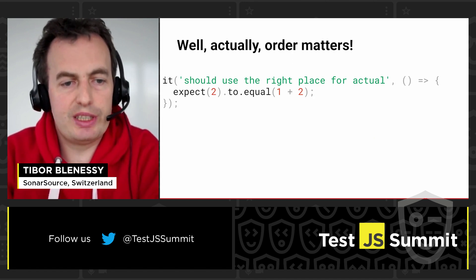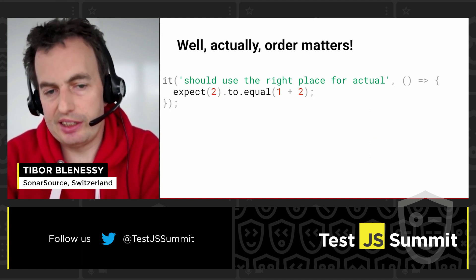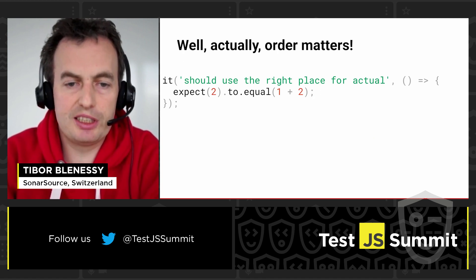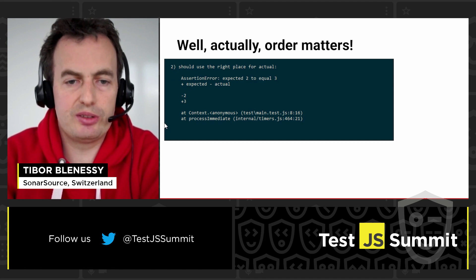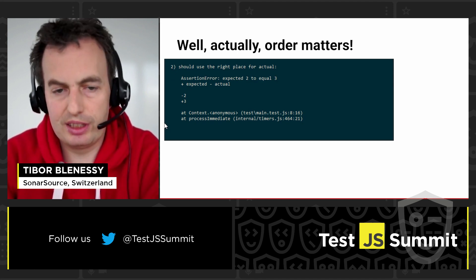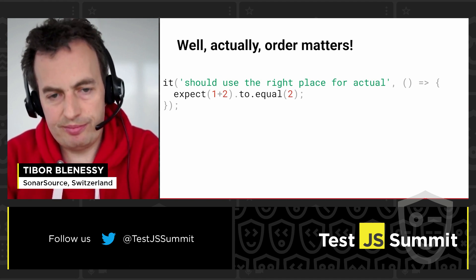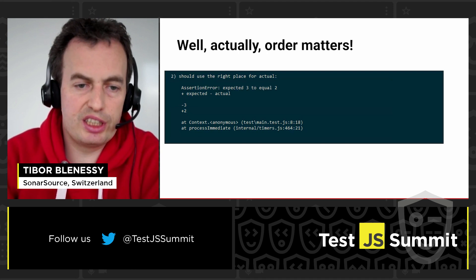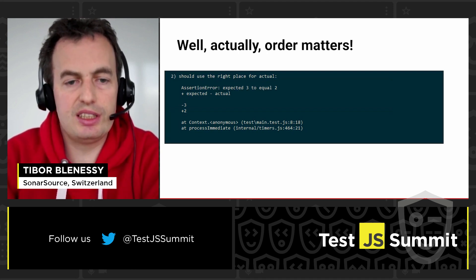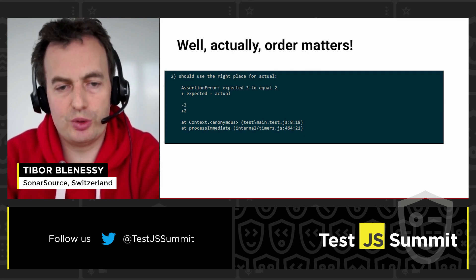To the expect, you should provide the result of the computation. And when you invoke some assertion, like equal in this case, it should be the expected value. If you swap it around, you will receive a message like: expected is two and it's supposed to equal to three, which is wrong and might be confusing.